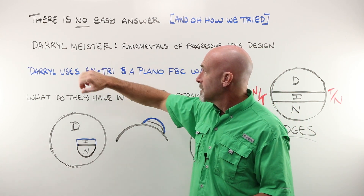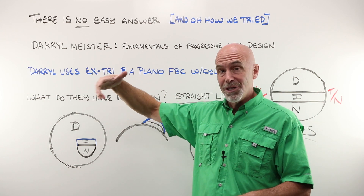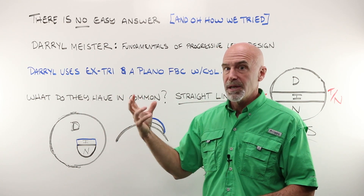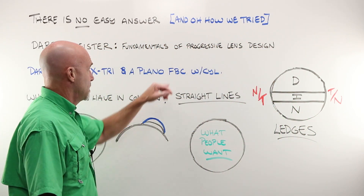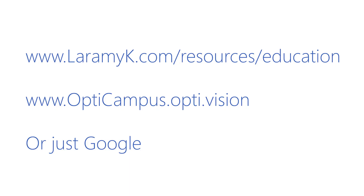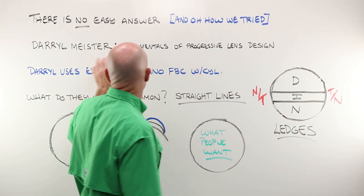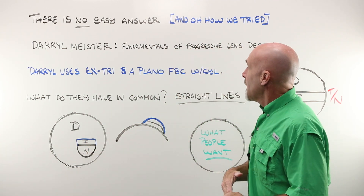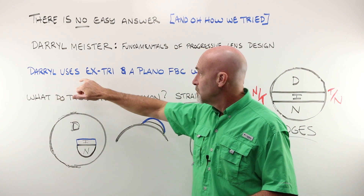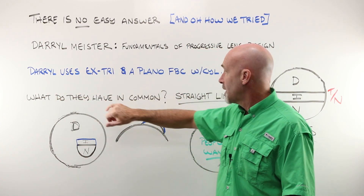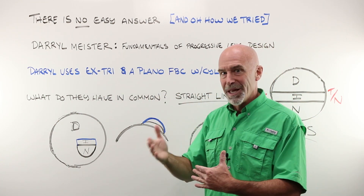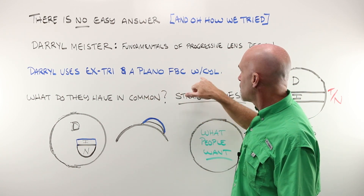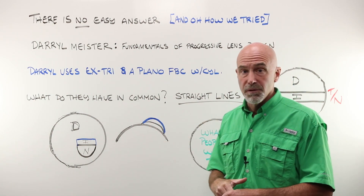The closest we got is a paper written by Daryl Meister — a genius at taking extraordinarily complex optical concepts and making them fairly user-friendly. His paper is called The Fundamentals of Progressive Lens Design. Daryl uses an executive trifocal to begin explaining the concept, and then when describing how cylinder becomes the answer to blending those zones, he uses a plano front base curve with a cylinder to show how a progressive lens is designed.